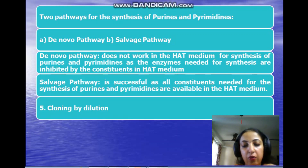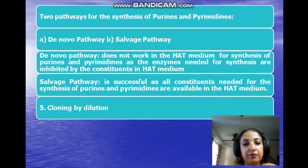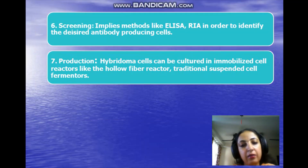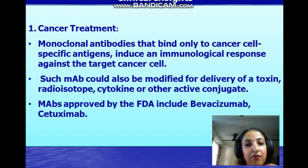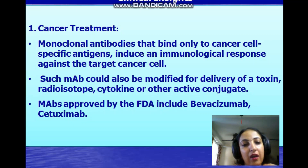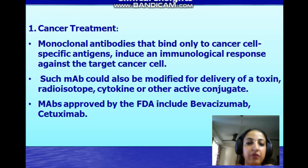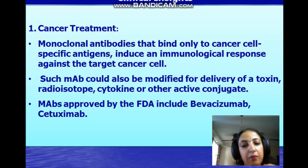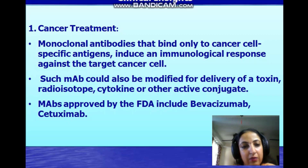This is followed by cloning or dilution, then screening, and then finally production. Now, where are we using these monoclonal antibodies? We are using them in several areas, for example in cancer: they bind only to cancer cells, specific antigens induce an immunological response against the target cancer cells, and there are several approved MAbs including Bevacizumab, Cetuximab, and several more, which I will show in a table later.